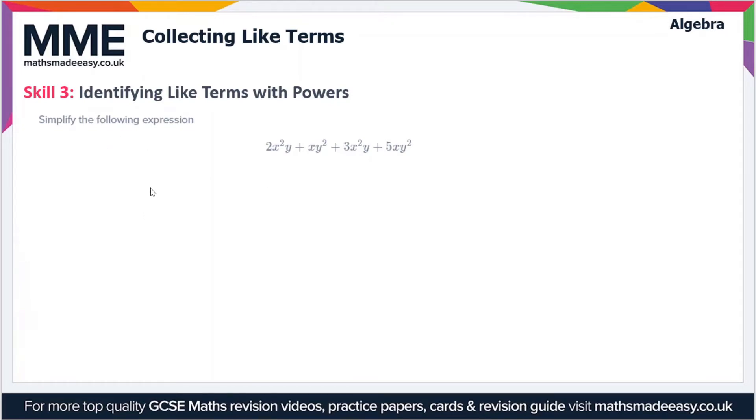So again, I'm going to use different colors to distinguish between the like terms here. We have 2x squared y and we have a 3x squared y. So in this case, x squared y is one variable or one term, and then the other terms will be the xy squared and the 5xy squared. So these are different variables: x squared y and xy squared.